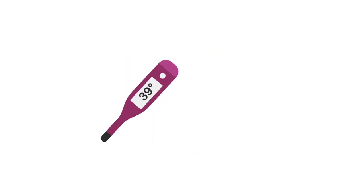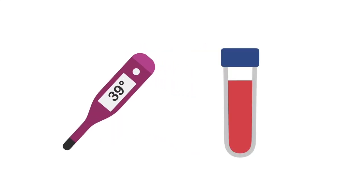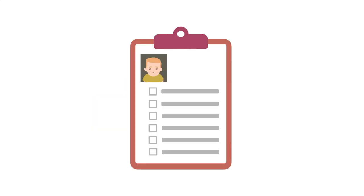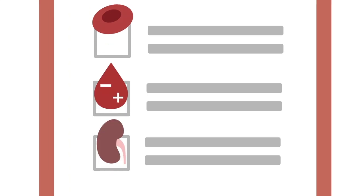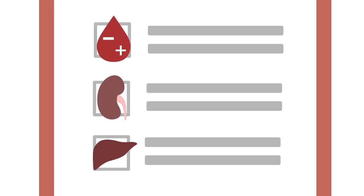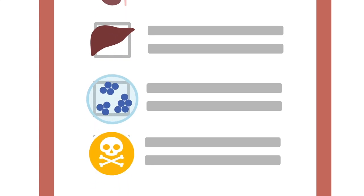Vital signs, including temperature and point-of-care serum glucose, should be obtained as soon as possible. A delirium workup usually includes blood cell counts, electrolytes, kidney and liver function, cultures, and a toxicology screen.